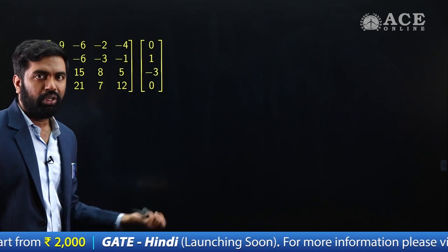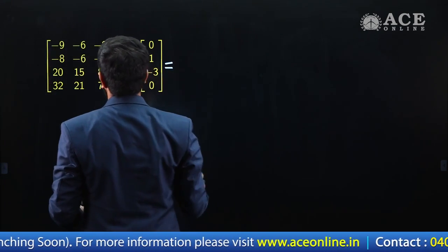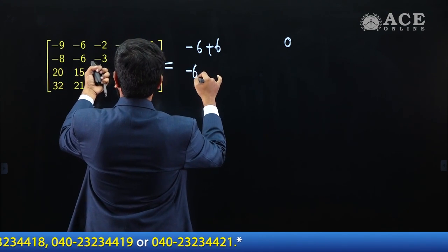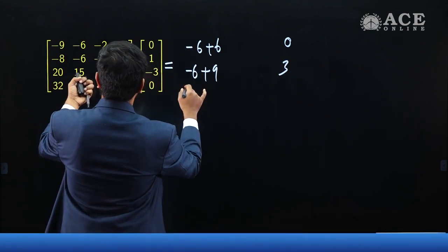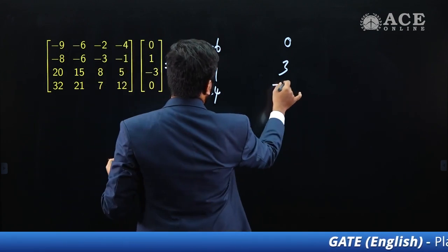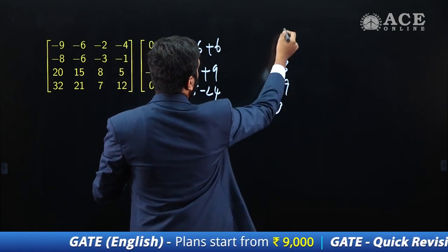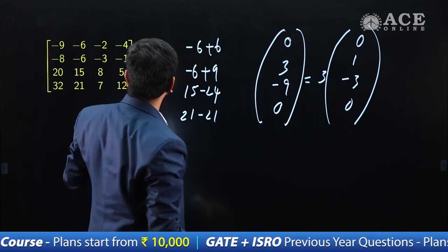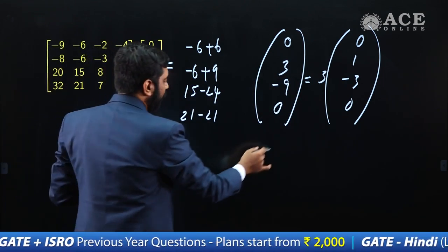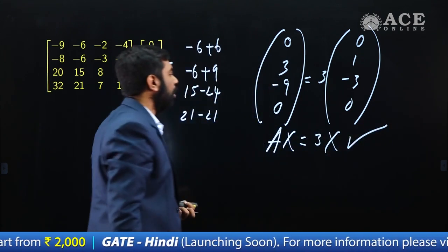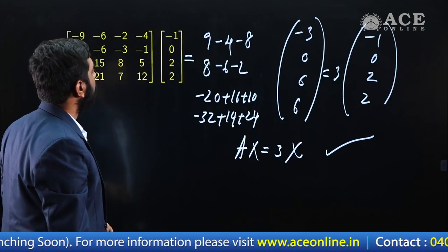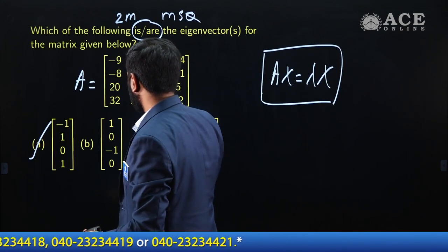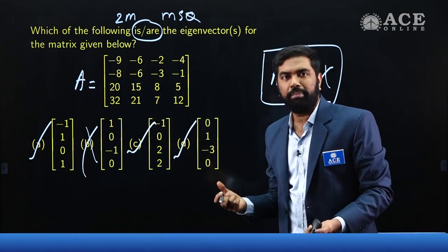Option D: vector [0, 1, −3, 0]. Computing: [−6+6 → 0, −6+9 → 3, 15−24 → −9, 21−21 → 0]. Taking out factor 3 gives [0, 1, −3, 0] — the same vector. So AX = 3X, confirming option D is also an eigenvector. Final answers: A is correct, B is not correct, C is correct, D is correct. These three options — A, C, D — should be selected in the exam.